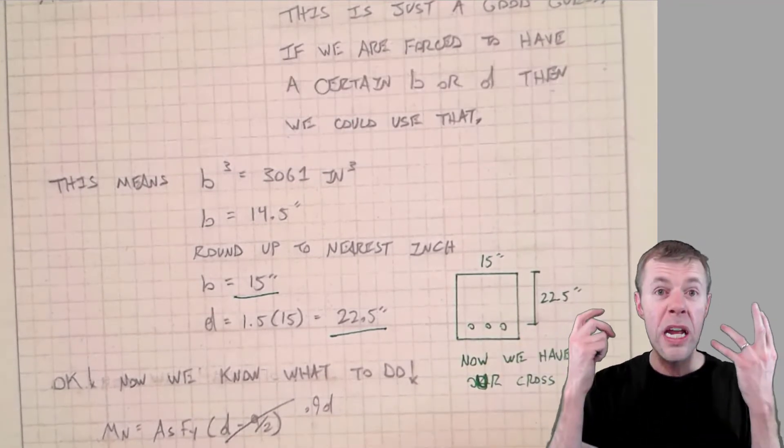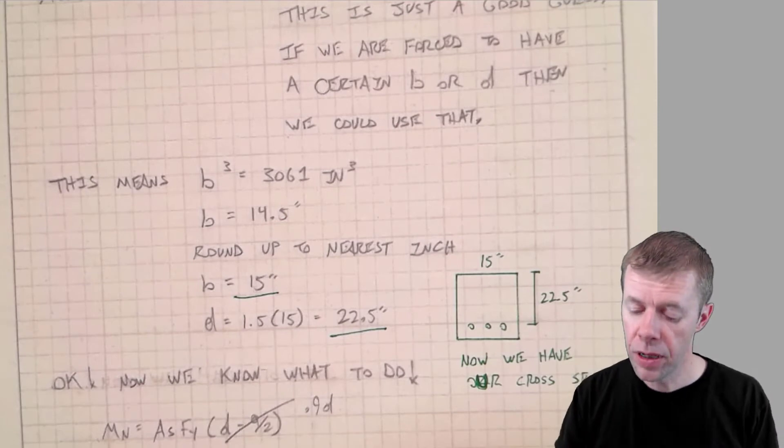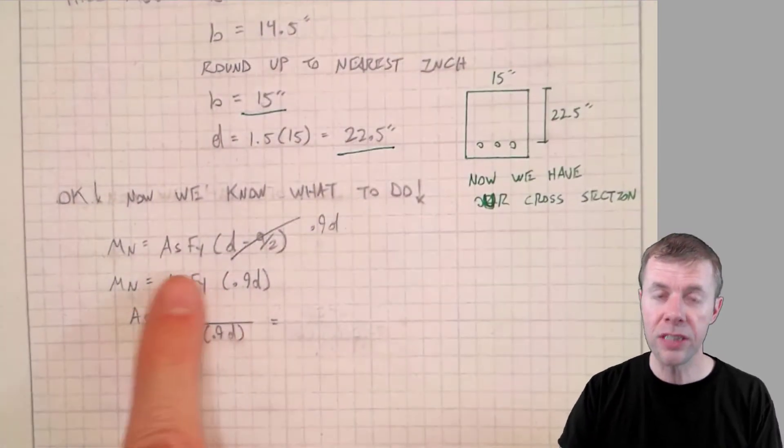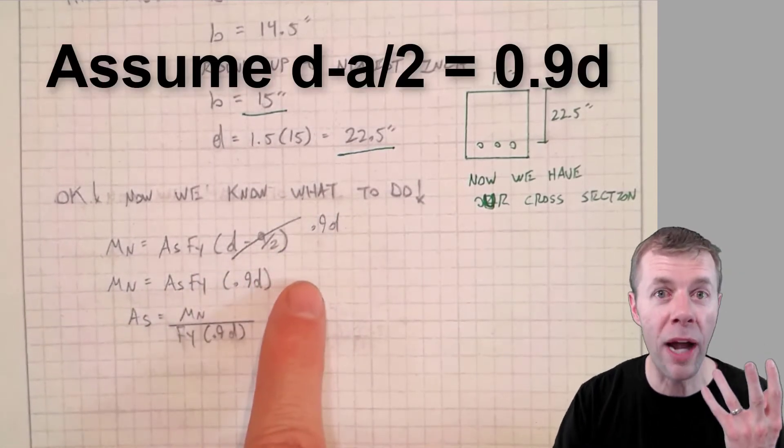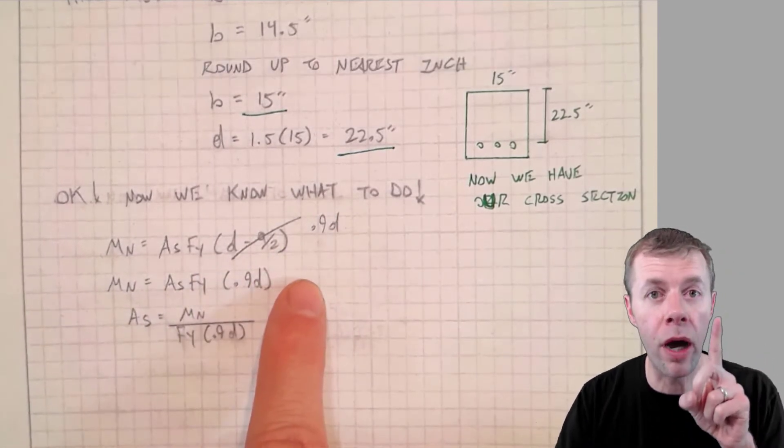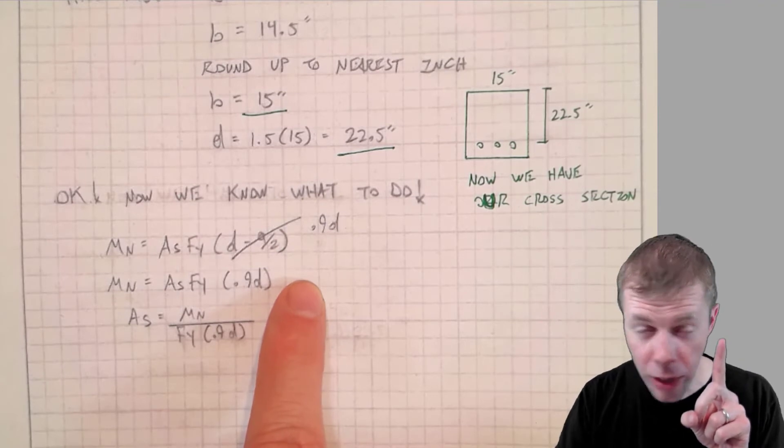So we can just start plowing ahead. We know what to do now. We're going to take our moment capacity. We're going to assume this is 0.9D. Why did we do that? Because it makes our lives a lot easier. And we're going to check it later on.